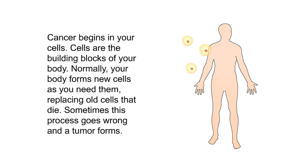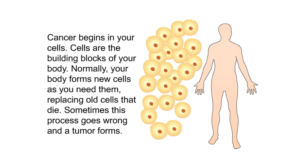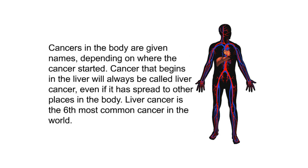Liver Cancer. Cancer begins in your cells, which are the building blocks of your body. Normally your body forms new cells as needed, replacing old cells that die. Sometimes this process goes wrong and a tumor forms. If a tumor is cancer, cells from the tumor can invade other tissues throughout the body, spreading through blood vessels and lymph channels. Cancers are named depending on where they started, so cancer that begins in the liver will always be called liver cancer, even if it has spread. Liver cancer is the sixth most common cancer in the world.